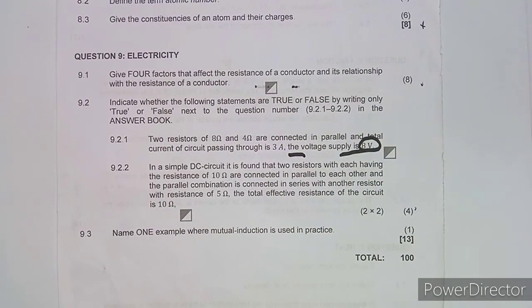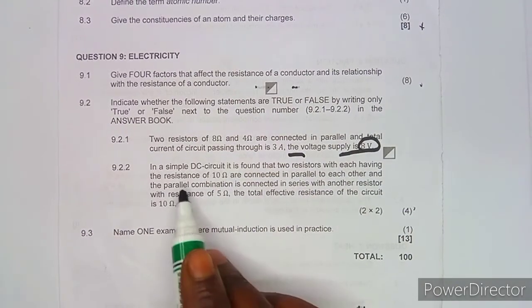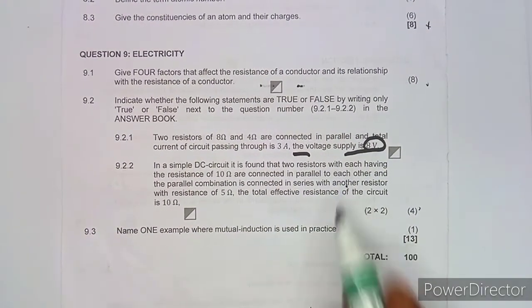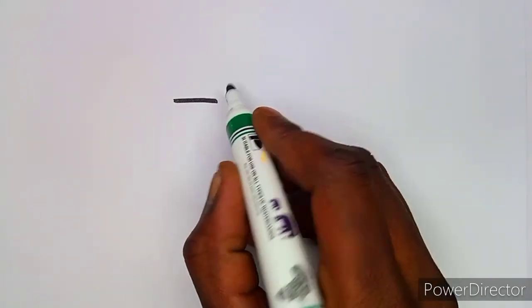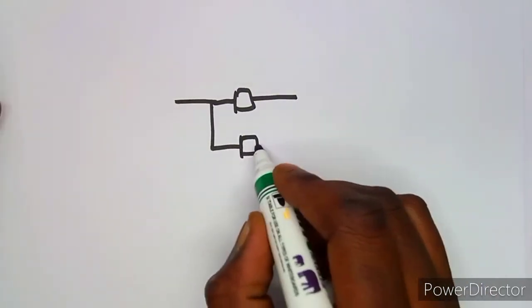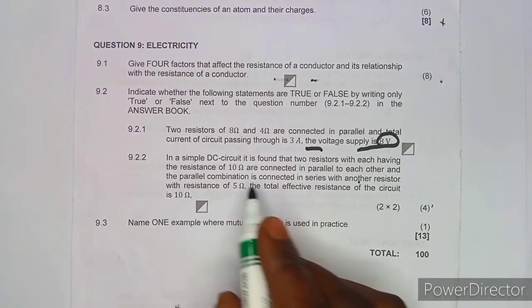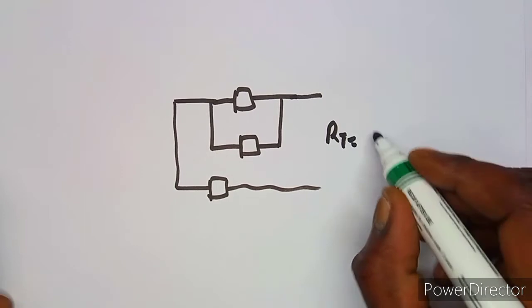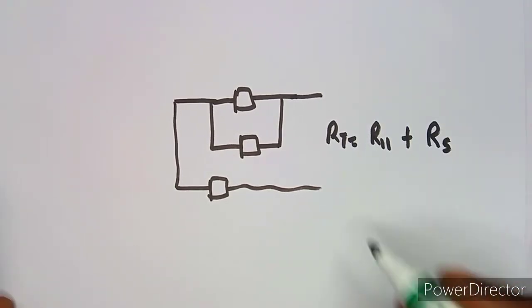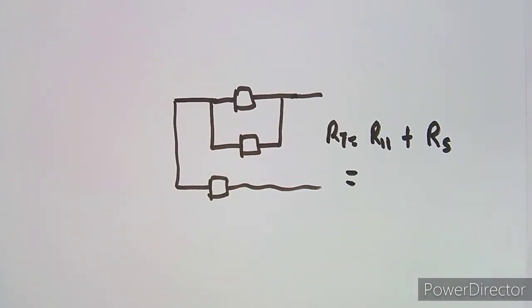Statement 9.2.2: in a single DC circuit, two resistors each having a resistance of 10 ohms are connected in parallel, and this parallel combination is connected in series with another resistor of 5 ohms. The total effective resistance of the circuit is stated to be 10 ohms. Let's draw this — two 10-ohm resistors in parallel, with a 5-ohm resistor in series.